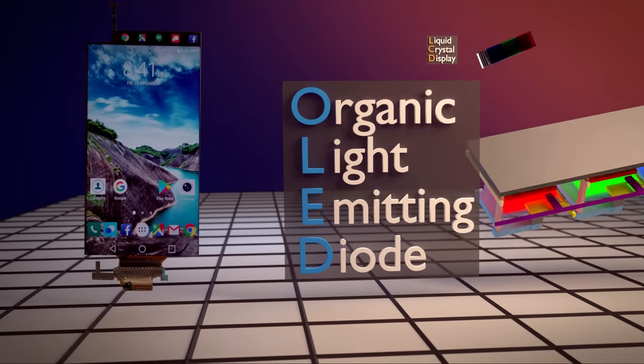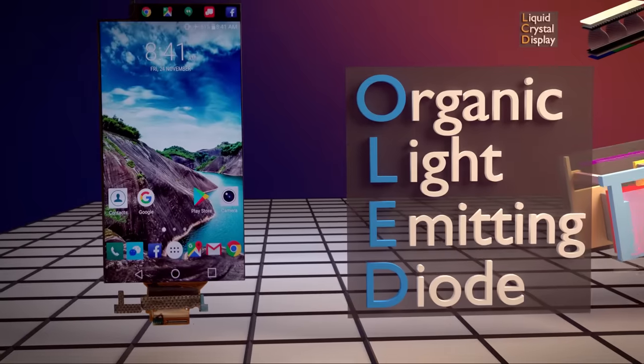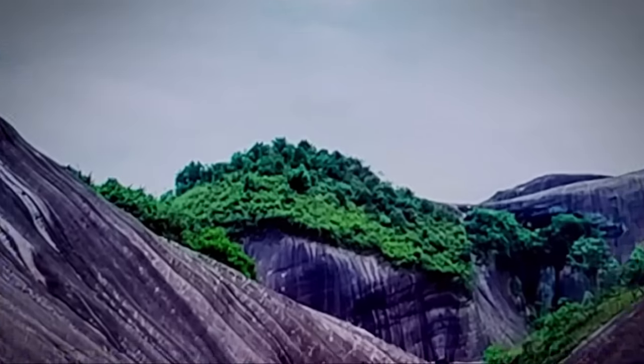OLED stands for Organic Light Emitting Diode. This high-resolution OLED display is what generates the high-quality images that we see whenever we look at our smartphone. This is a crazy intricate grid.